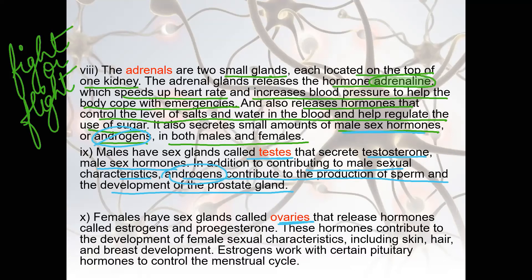Females have sex glands called ovaries that release hormones called estrogens and progesterone. These hormones contribute to the development of female sexual characteristics including skin, hair, and breast development. Estrogen also works with certain pituitary hormones to control the menstrual cycle.